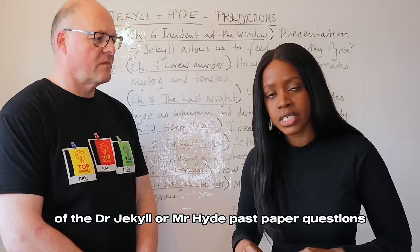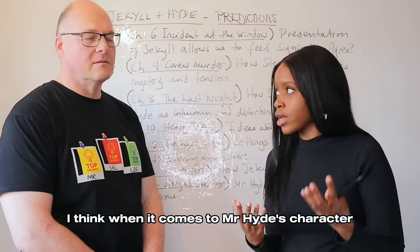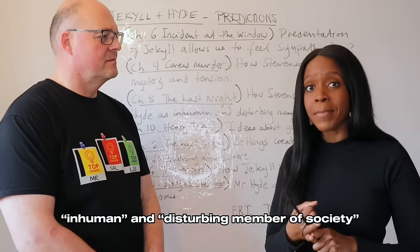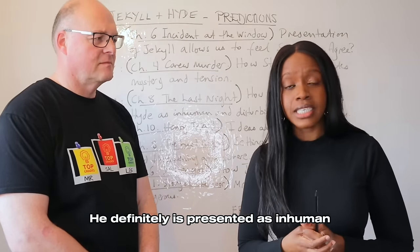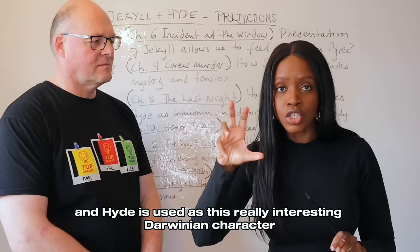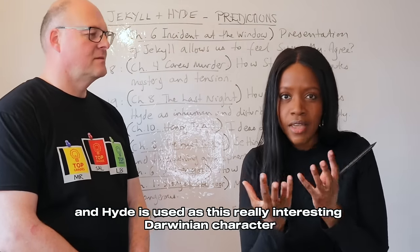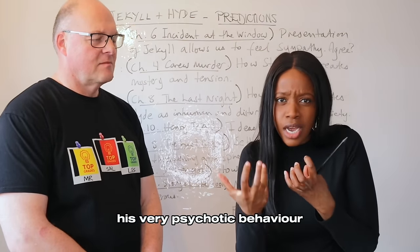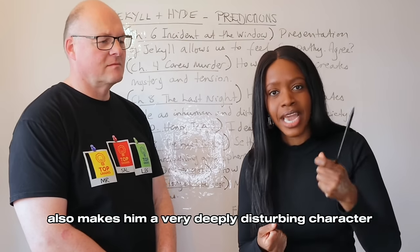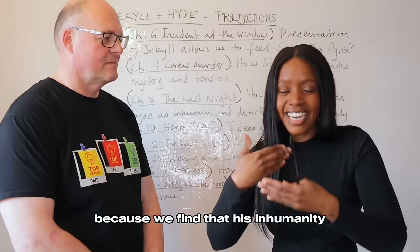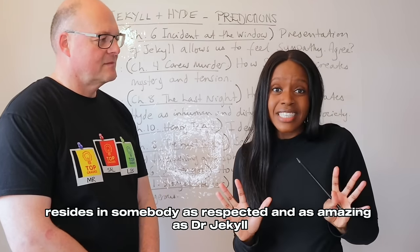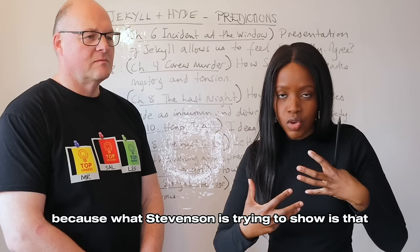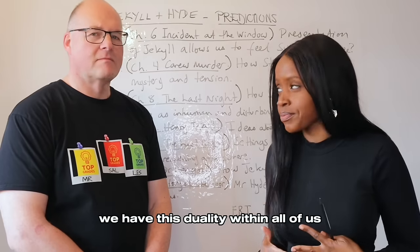When it comes to Mr. Hyde's character, the keywords 'inhuman' and 'disturbing' fit him perfectly. He's ape-like and short, and Hyde is used as a really interesting Darwinian character that inspires a lot of fear in Stevenson's Victorian readers. His psychotic behaviour also makes him a deeply disturbing character. This is the genius of the novel — because we find that that inhumanity and disturbing aspect of Mr. Hyde resides in somebody as respected as Dr. Jekyll.